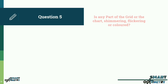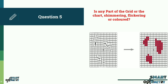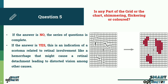Question 5: Is any part of the grid or the chart shimmering, flickering, or colored? If the answer is no, the series of questions is complete. If the answer is yes, this is an indication of a scotoma related to retinal involvement, such as a hemorrhage that might cause a retinal detachment leading to distorted vision, among other causes.